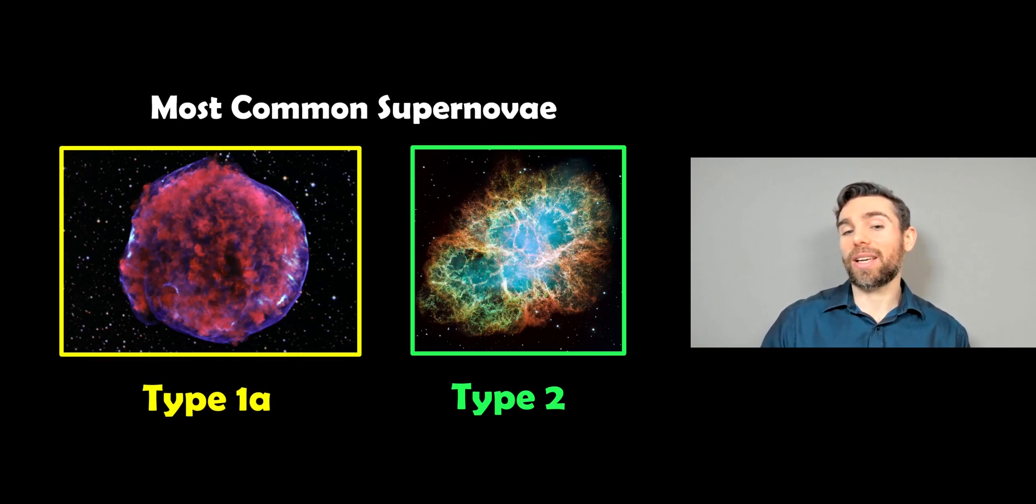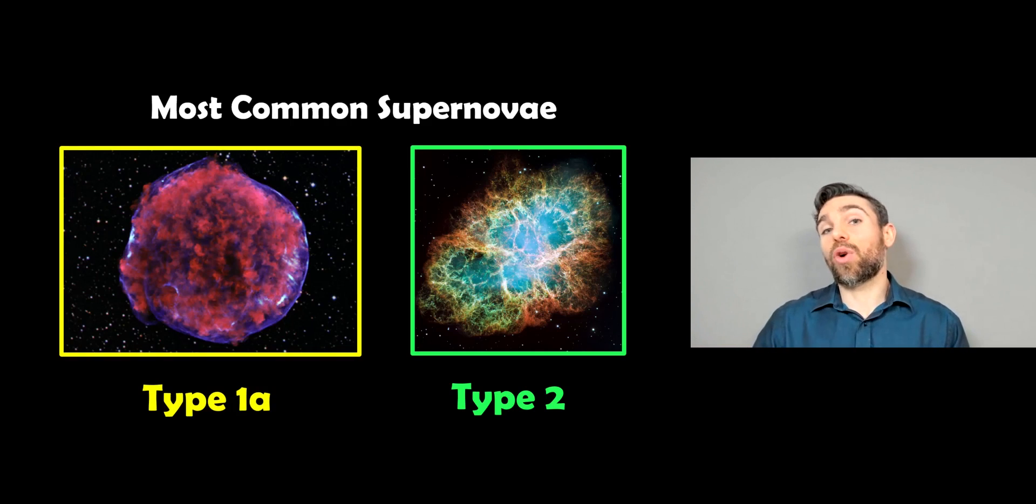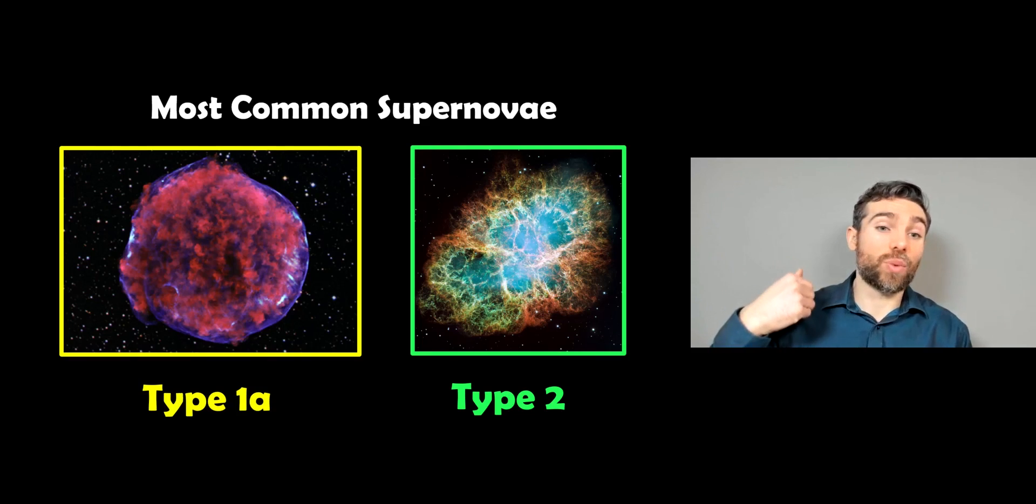Now the type 1a, that typically occurs in a binary system with a white dwarf and a red giant. Type 2s are generally kind of core collapse stars when they reach the end of their life, so they're two different things and we see different things as a result of that, so they are distinctly different.